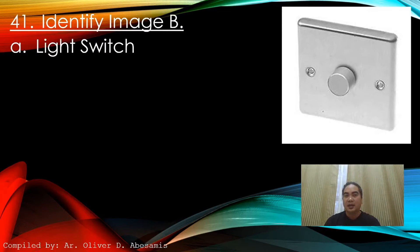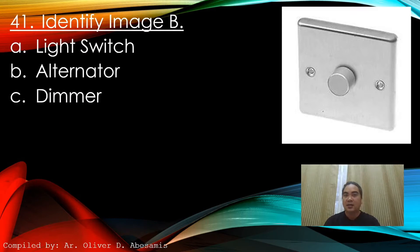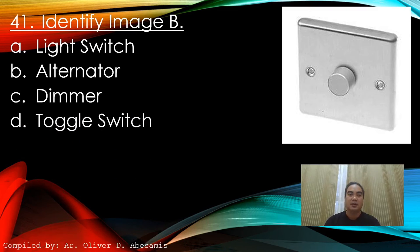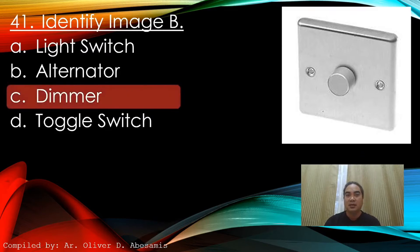Identify the image. A. Light switch. B. Alternator. C. Dimmer. D. Toggle switch. Answer: C. Dimmer.